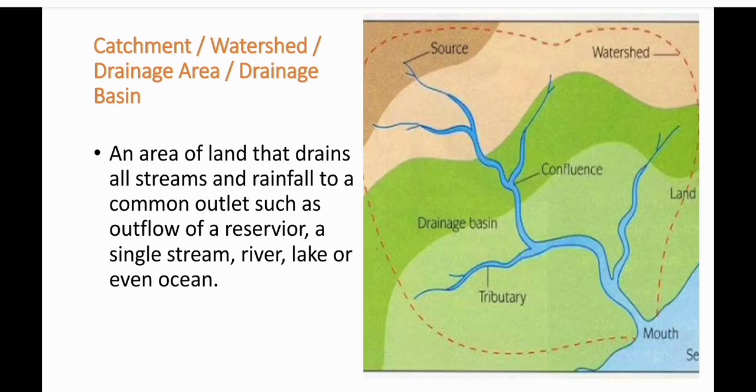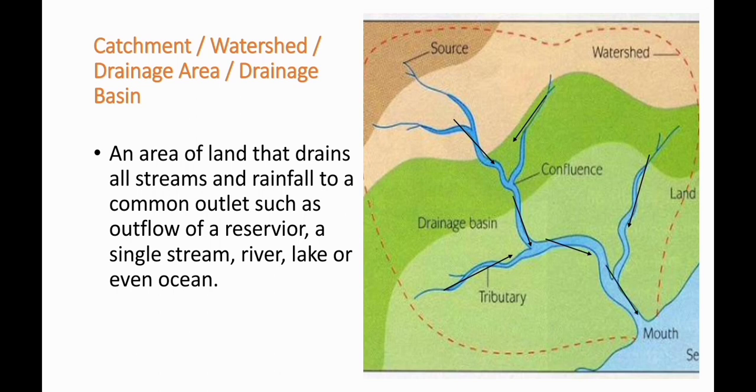Look at the image shown. The area surrounded by the dotted line is a catchment, watershed, or drainage area. You can see all the water streams in this area are draining their water to a common outlet at the mouth of the sea.